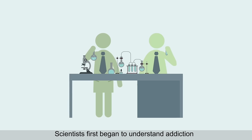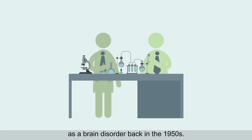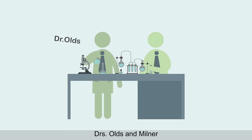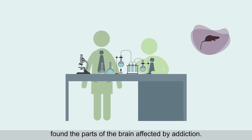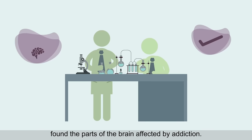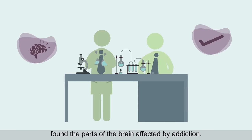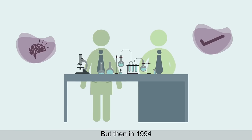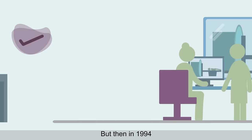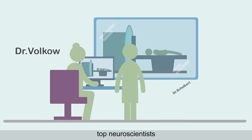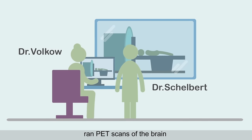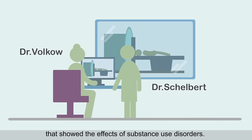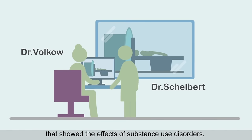Scientists first began to understand addiction as a brain disorder back in the 1950s. Doctors Olds and Milner, in laboratory studies of rats, found the parts of the brain affected by addiction. But then in 1994, doctors Volkoff and Shelbert, top neuroscientists, ran PET scans of the brain that showed the effects of substance use disorders.